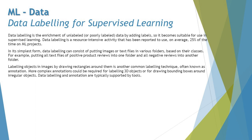Unlabeled data can be very clumsy and distributed in a way that you're not sure whether you're using the right set of data. If you have a systematically organized, labeled data set, it can considerably reduce your time — that 25 percent reduction in effort. In its simplest form, data labeling can consist of putting images or text files in various folders based on their classes, for example putting all text files of positive product reviews into one folder and all negative reviews into another.